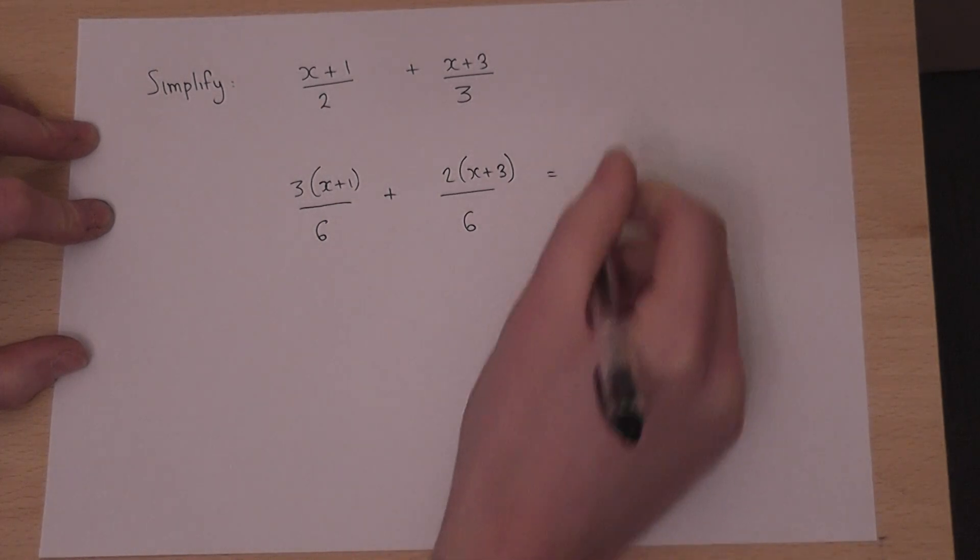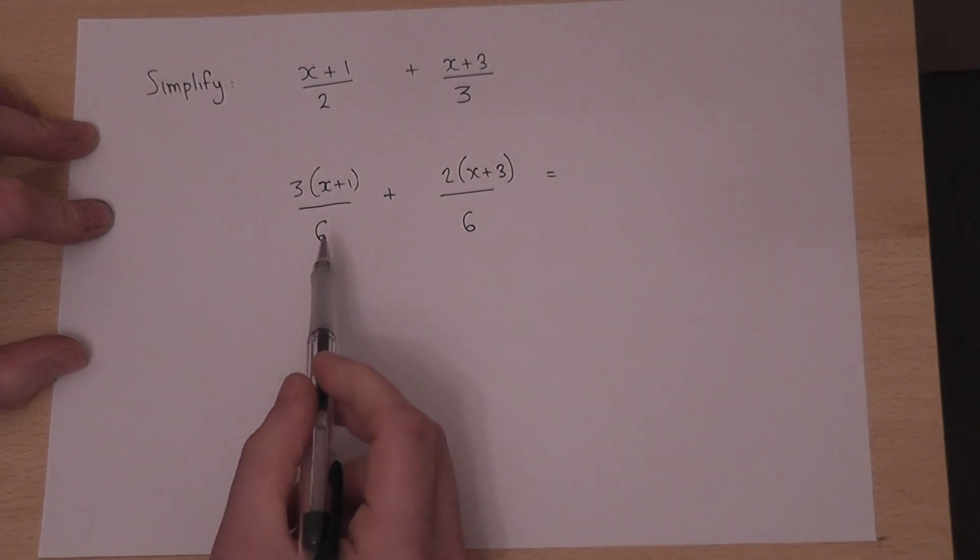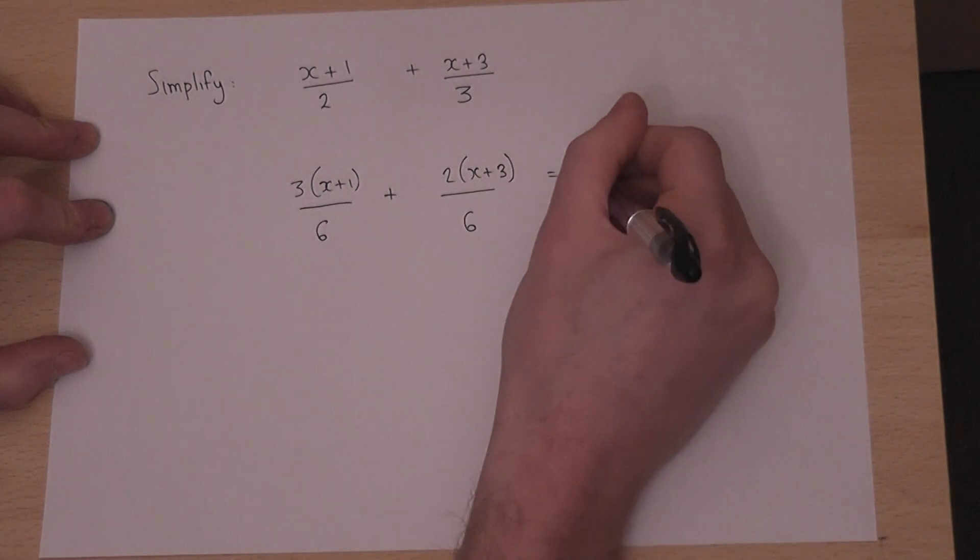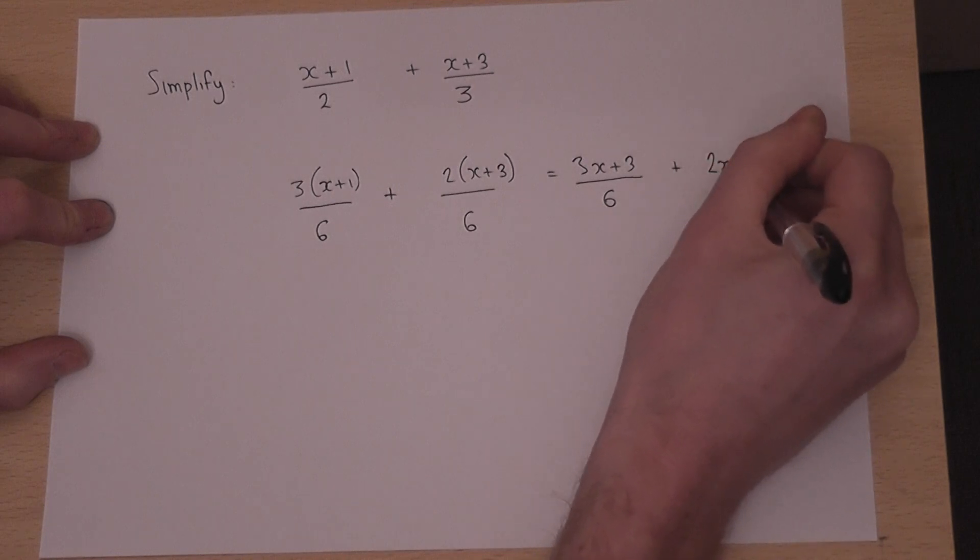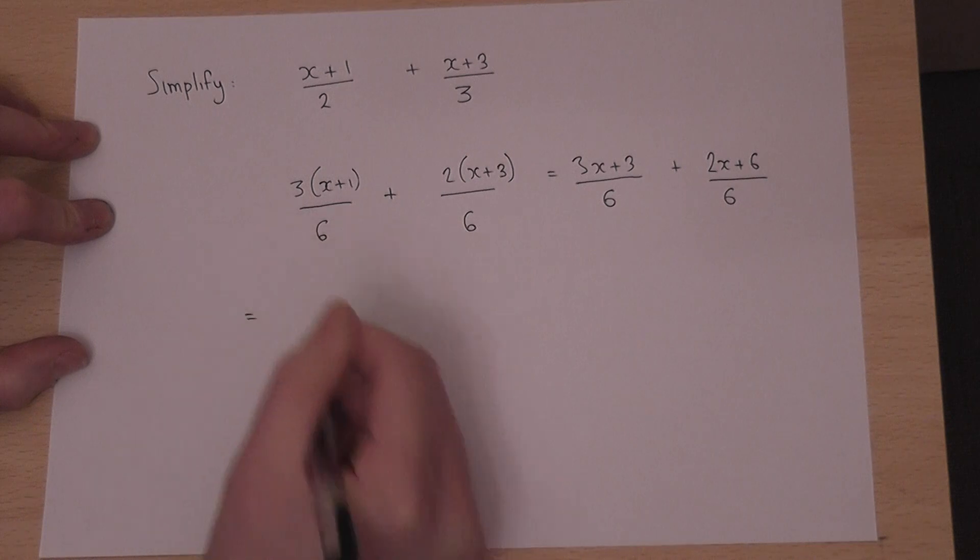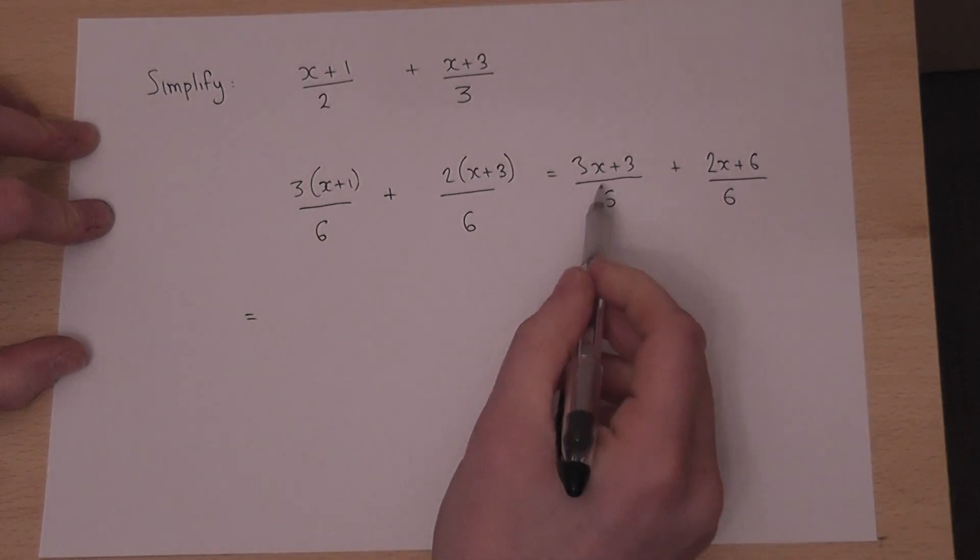Now, I can then expand the numerators, so 3x plus 3 over 6 plus 2x plus 6, over 6. And to finish off, I can add together the fractions.